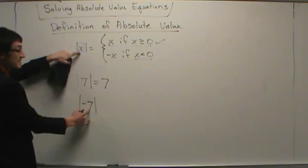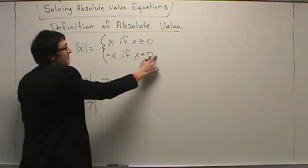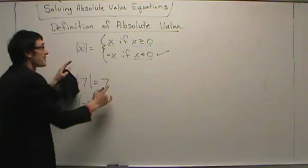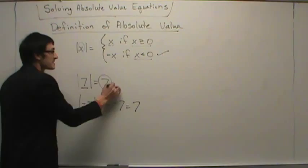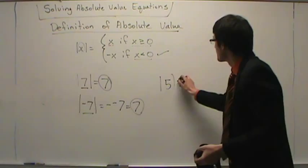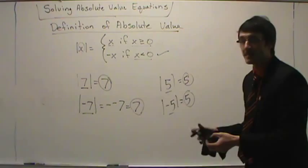Now we define x to be negative seven. We look at the definition. Is negative seven positive or negative? It's negative, so we're in the second case. If x is negative, take its opposite. Since x is negative seven, we take its opposite: negative negative seven, which is just seven. So the absolute value of seven is seven, and the absolute value of negative seven is seven. If it's positive, leave it alone. If it's negative, change its sign — make it positive.